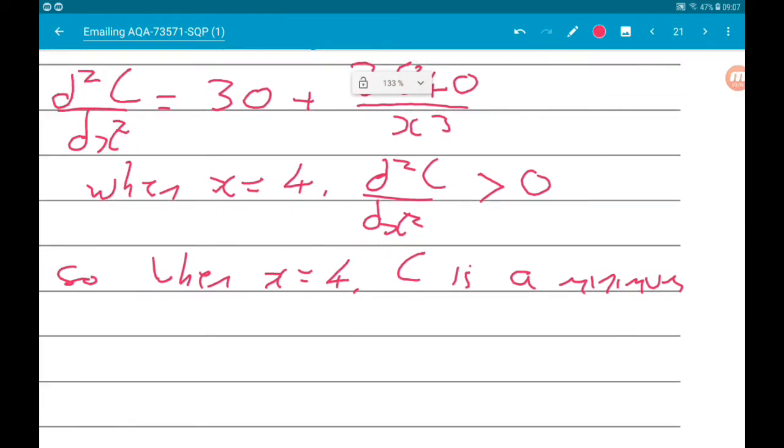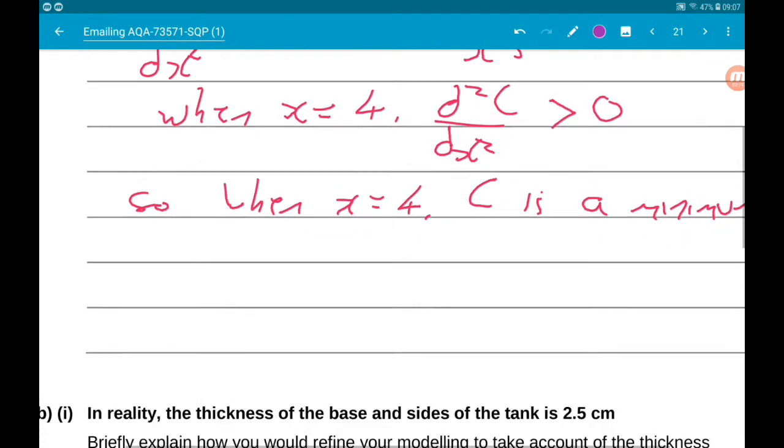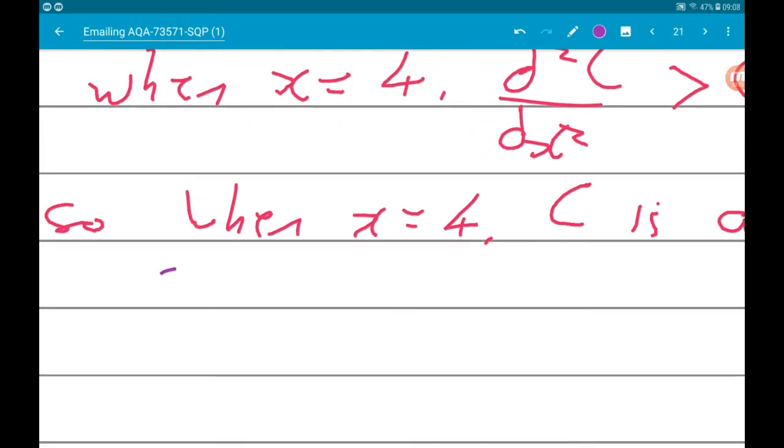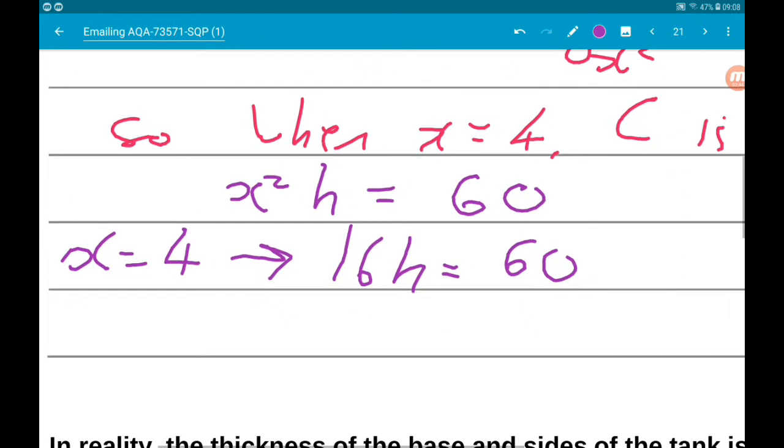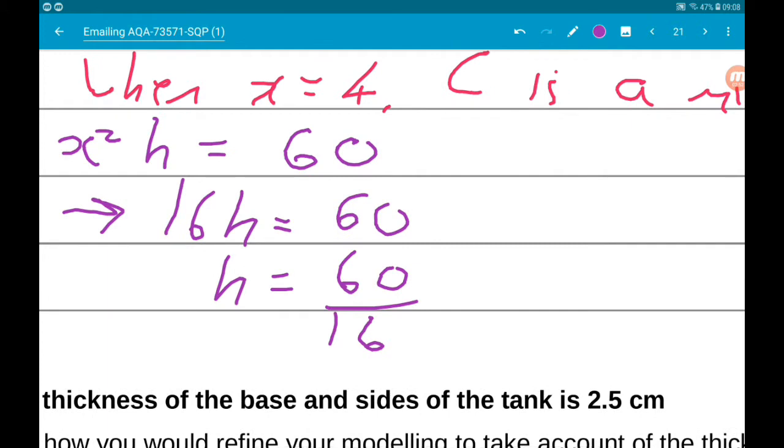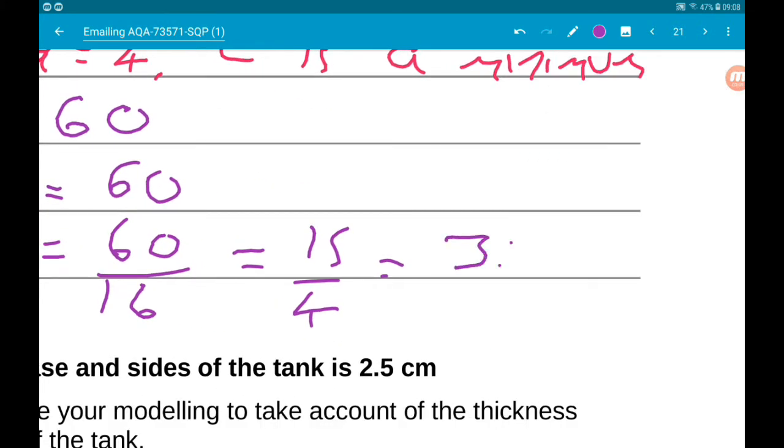We need to do one more thing. Remember this whole adventure was about finding the height of the tank so that the cost is a minimum. Now we're going back to x²h = 60. When x = 4, we get 16h = 60, so h = 60/16 = 15/4 = 3.75 meters. Job done, nice question, I enjoyed that.